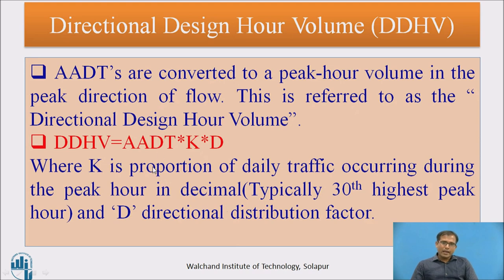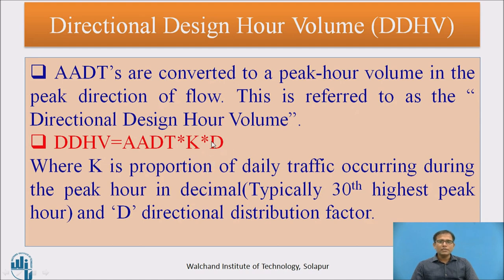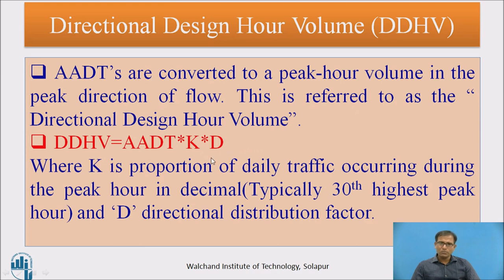If traffic is not balanced on the left and right sides, we can calculate the Directional Design Hourly Volume. The D factor is involved in calculating the directional design hourly volume. The ADT is converted to peak hour volume in the peak direction of flow — this is referred to as the Directional Design Hourly Volume (DDHV).